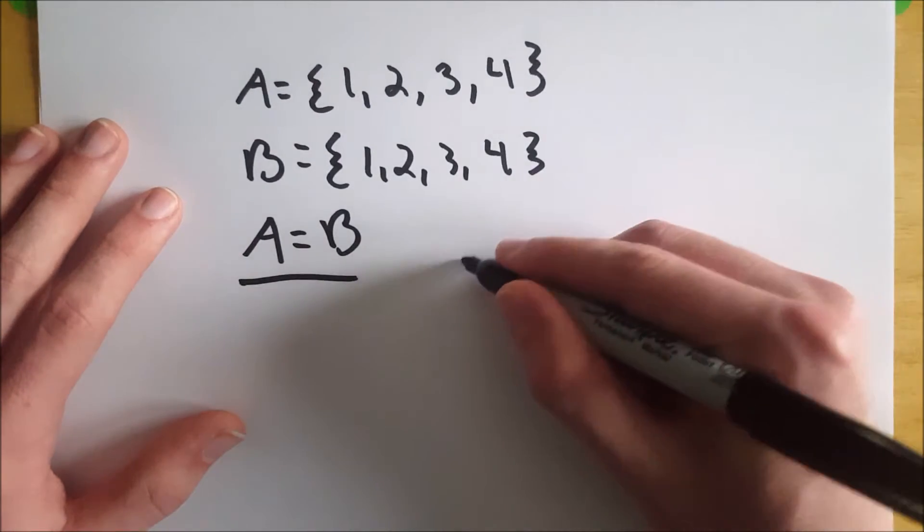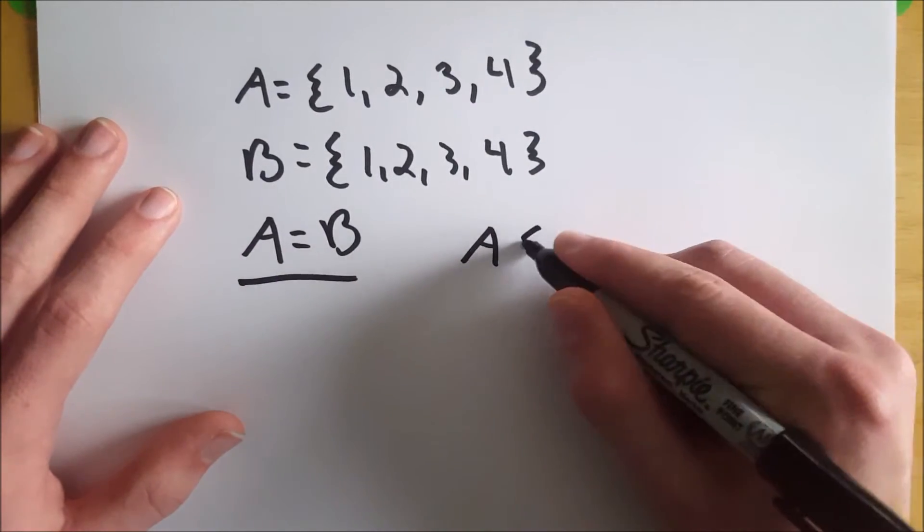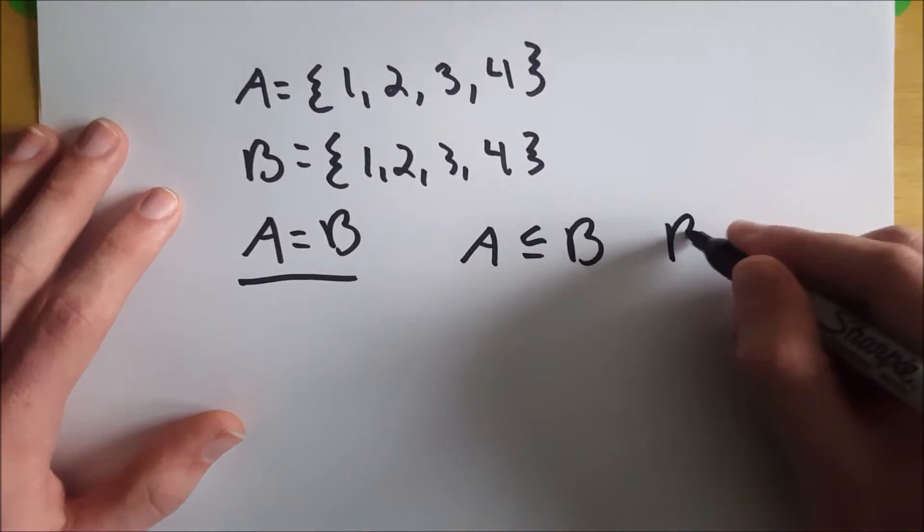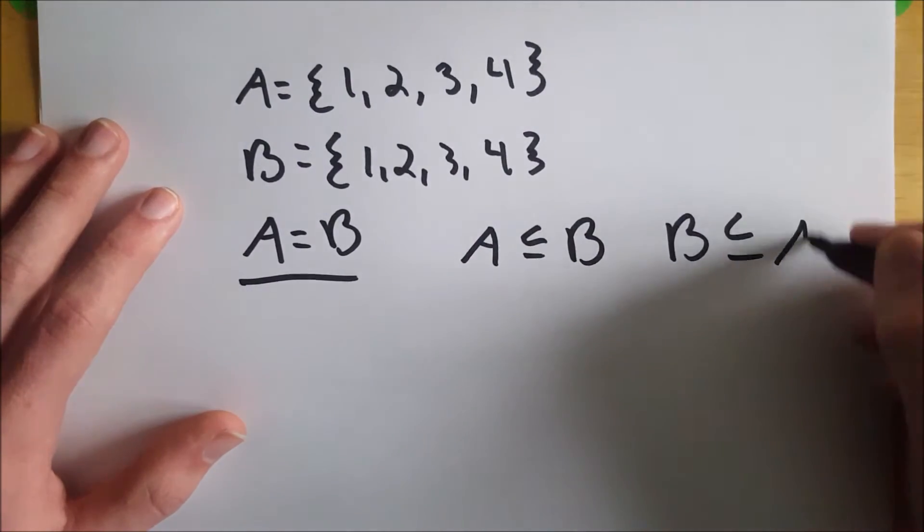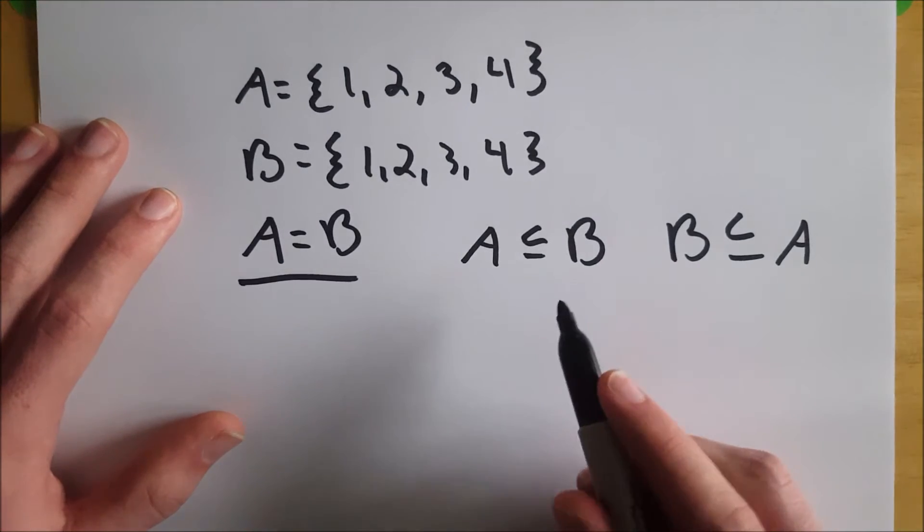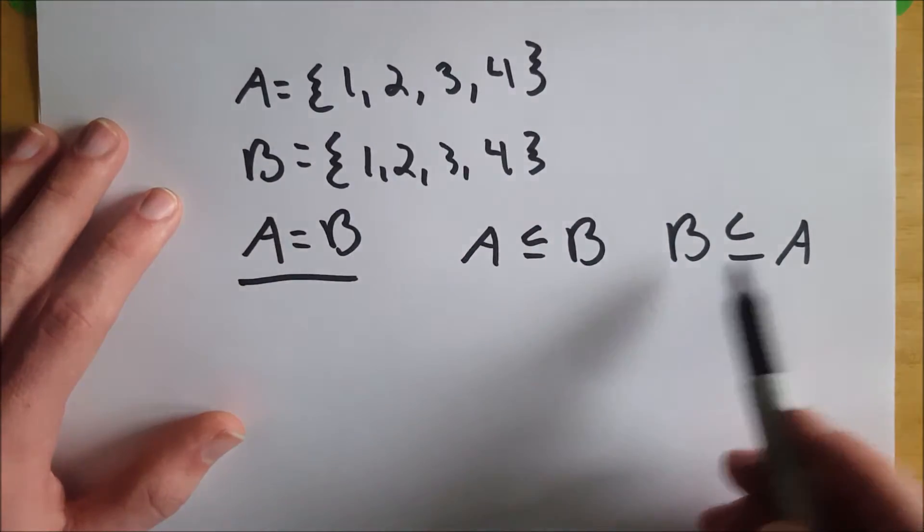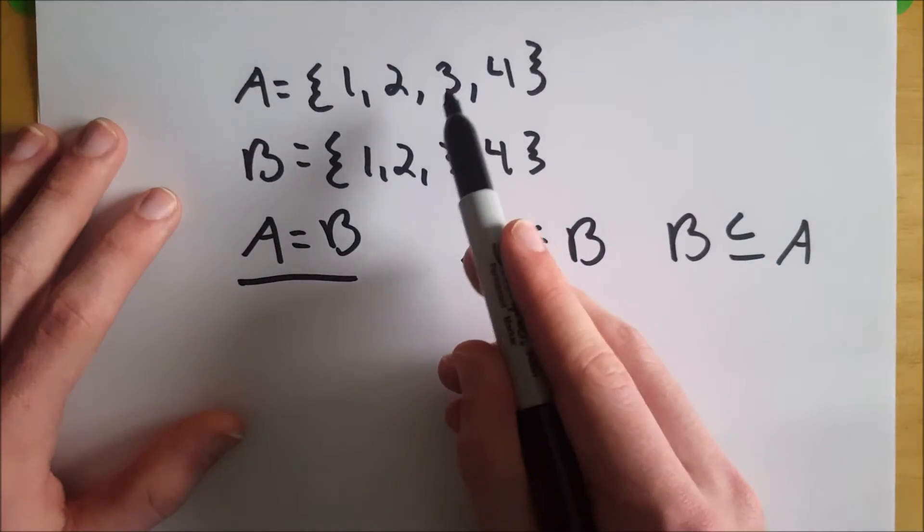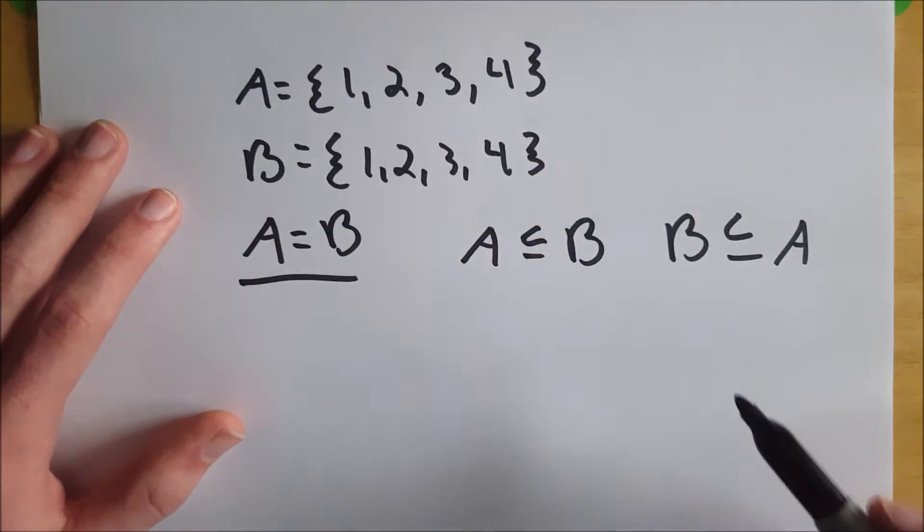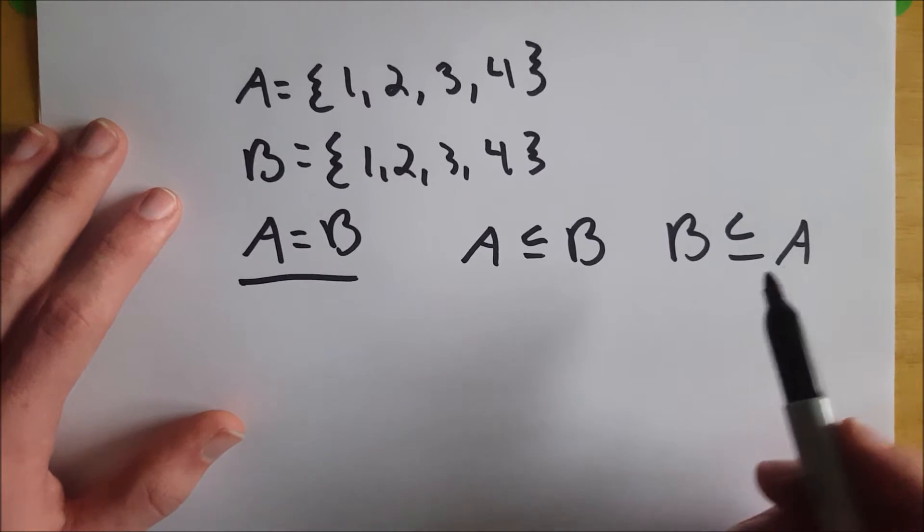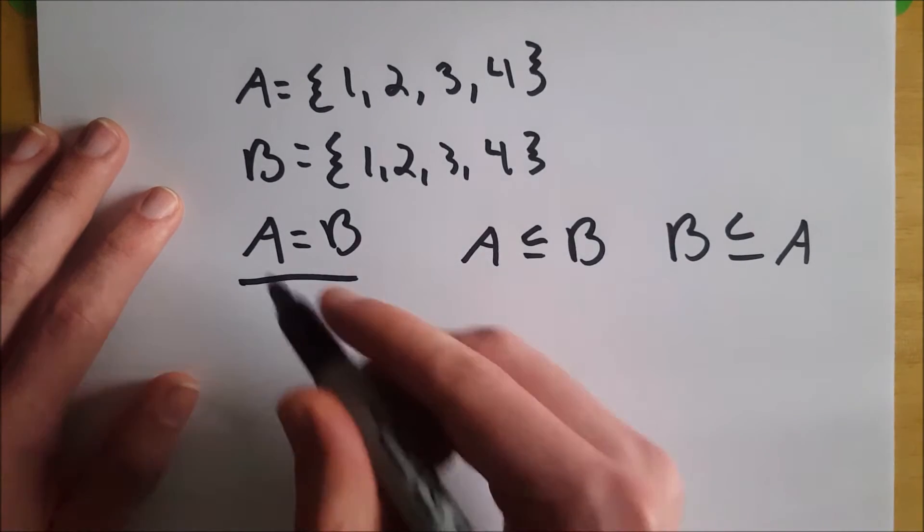A property of equal sets is that set A is a subset of B and set B is a subset of A. A is a subset of B because B contains every element that's in A, and B is a subset of A because A contains every element that's in B. So if two sets are subsets of each other, then you know those sets are equal.